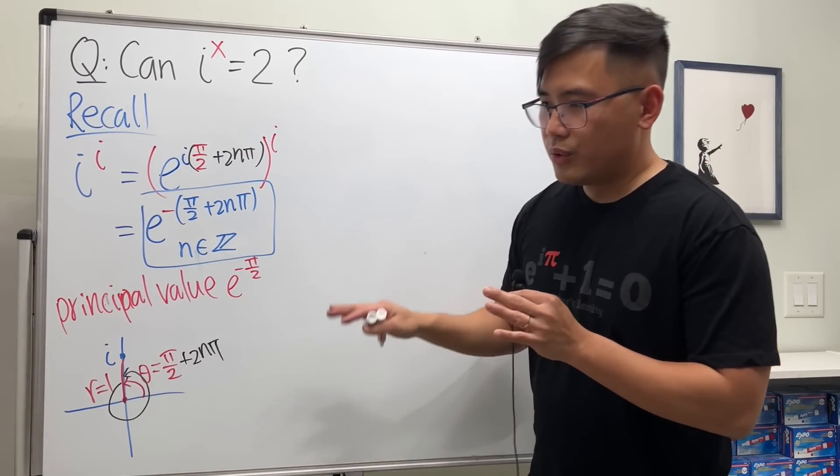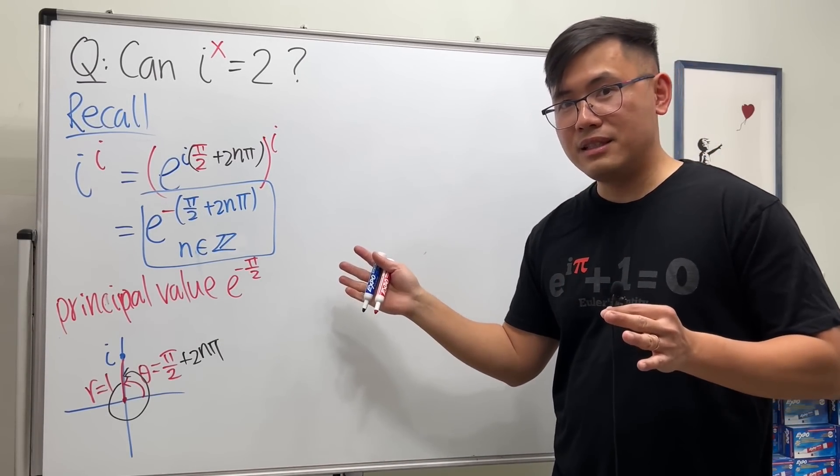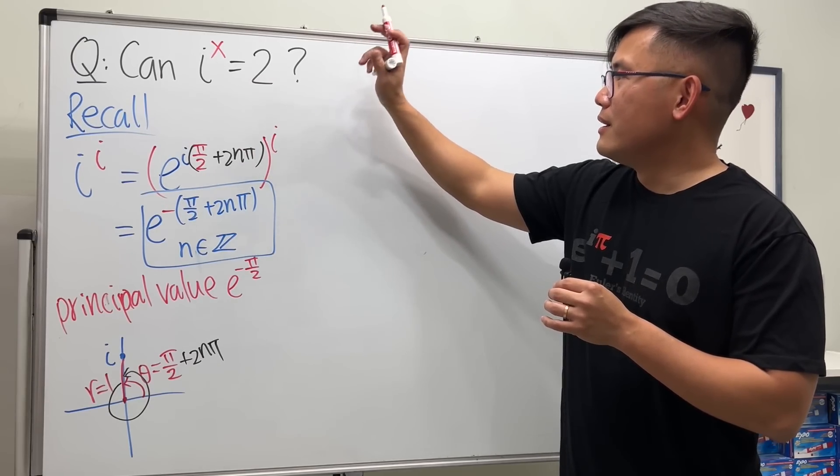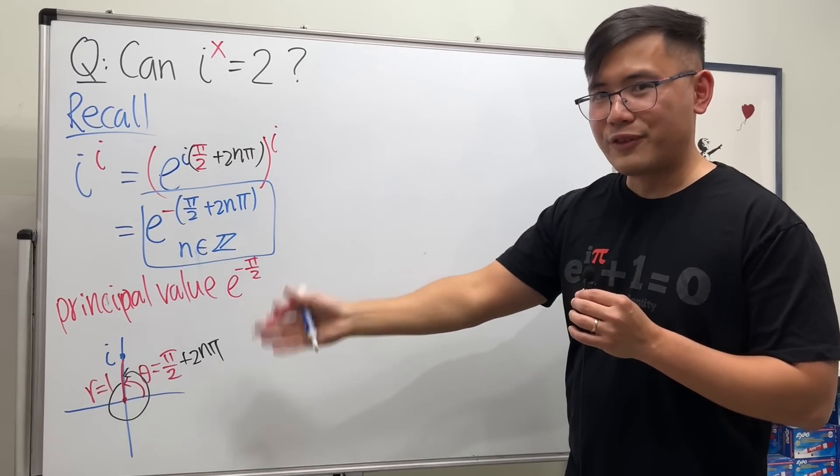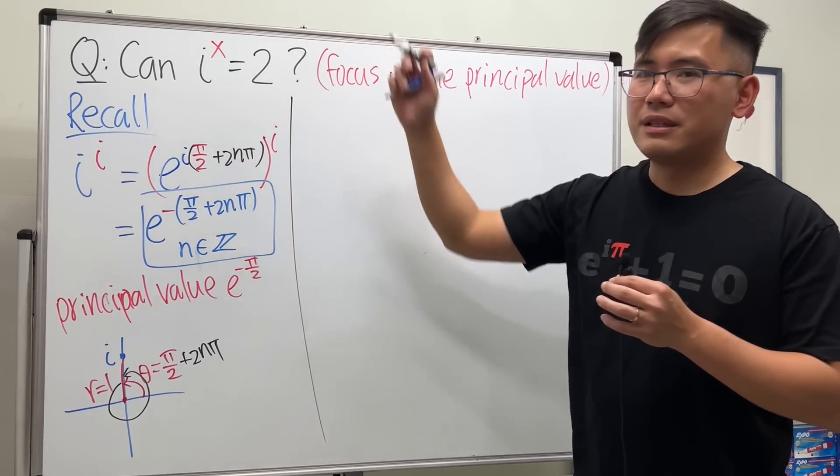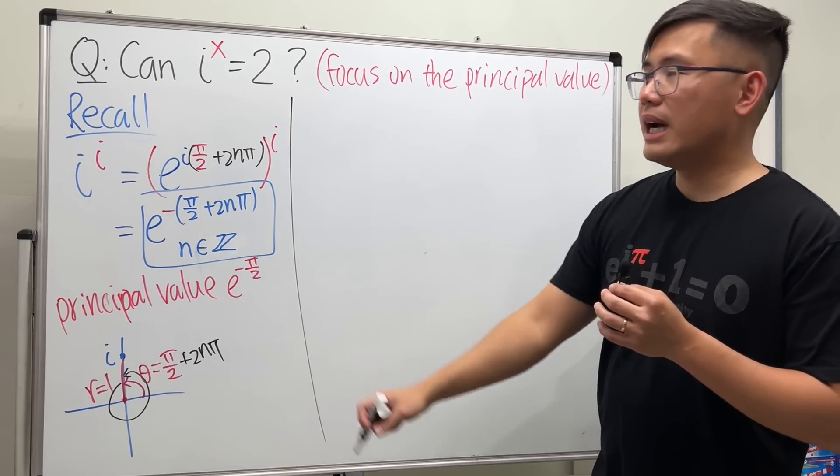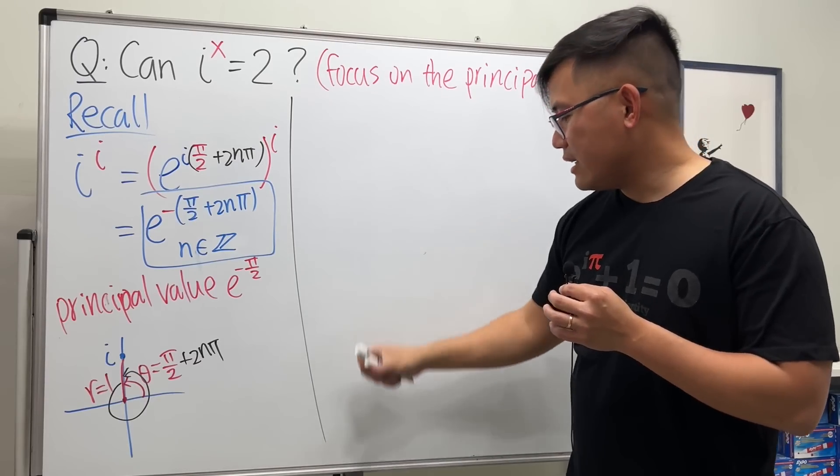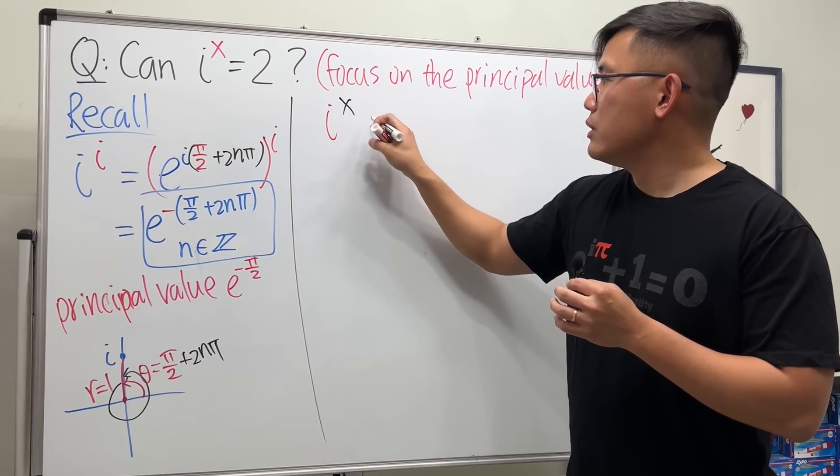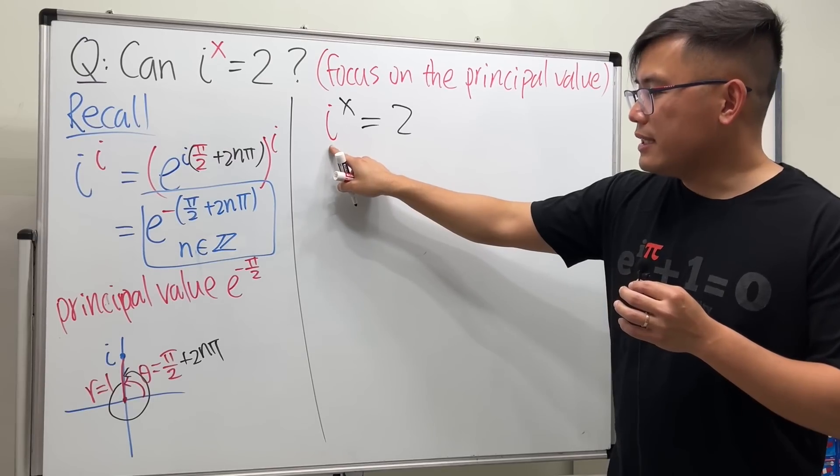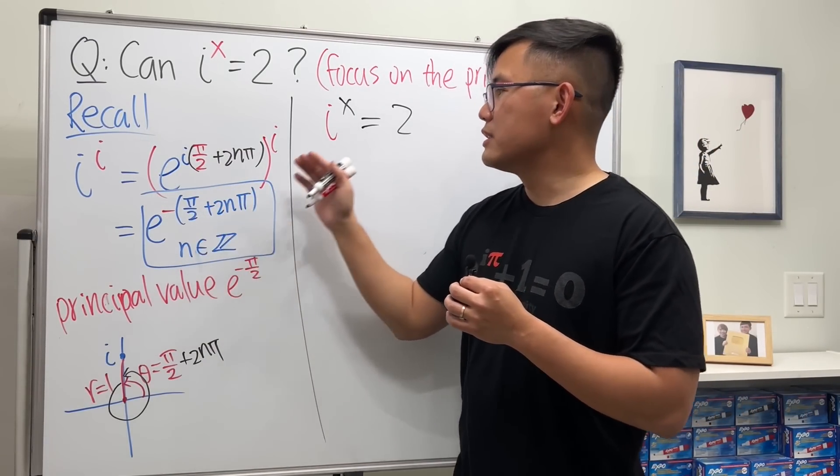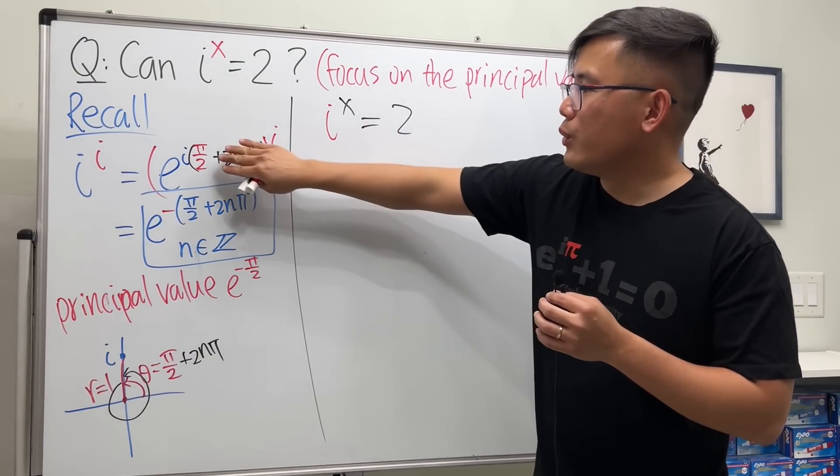To reduce confusion and complexity of this video, I just want to focus on the principal value, just the first answer, and we do have nice results. So how can we make this happen? Same idea. First we have i to the x power equals 2.